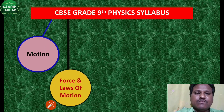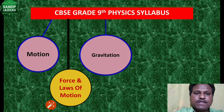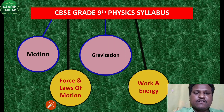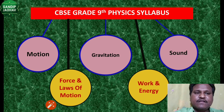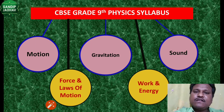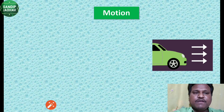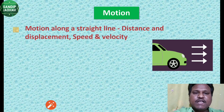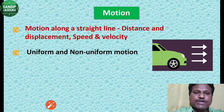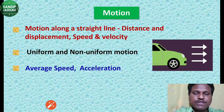Let's see the syllabus of Physics. We have five topics in Grade 9: Motion, Force and Laws of Motion, Gravitation, Work and Energy, and Sound. Let's see the detailed syllabus of each chapter. In the chapter on Motion, we will study speed, velocity, and acceleration — that is, uniform and non-uniform motion — and how objects travel in a straight line.